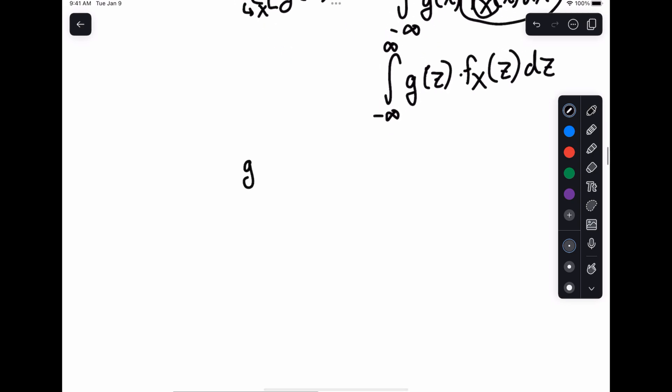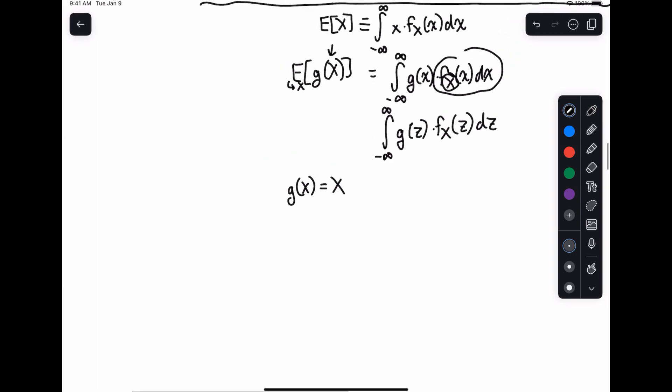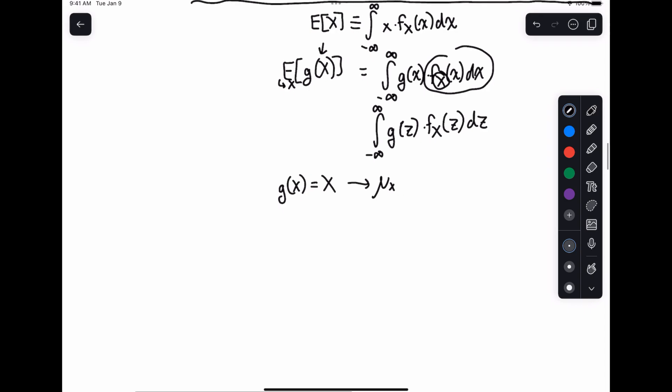So the first one I want to talk about is, of course, g of x equals x. And in this case, what you get is mu of x, you get your expectation. Basically, g of x is the identity function, you put in a value for x, and you get x. That's what g of x is doing, it's just returning the identity. So what you get is this, which is called the mean or expected value.